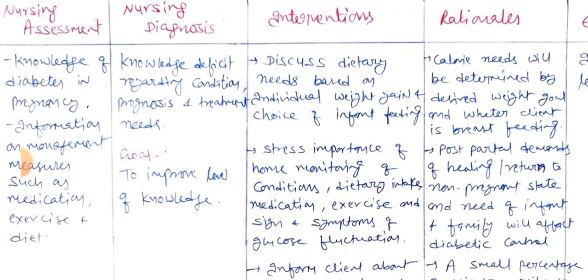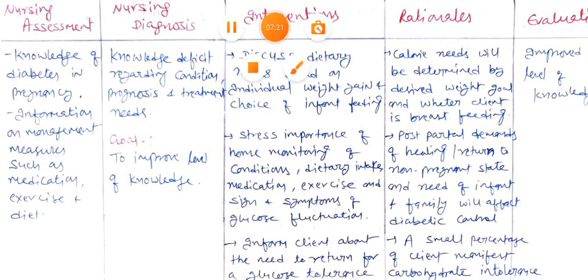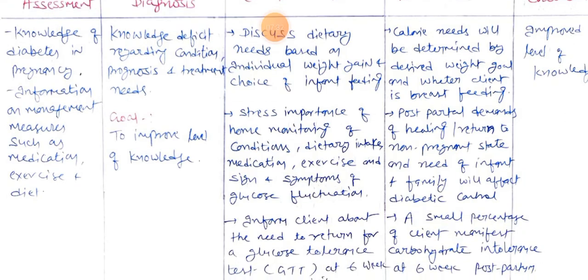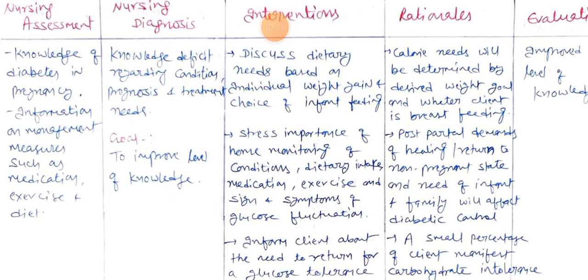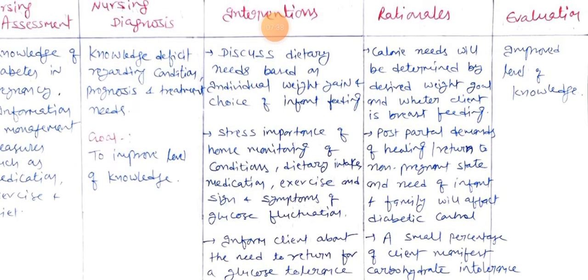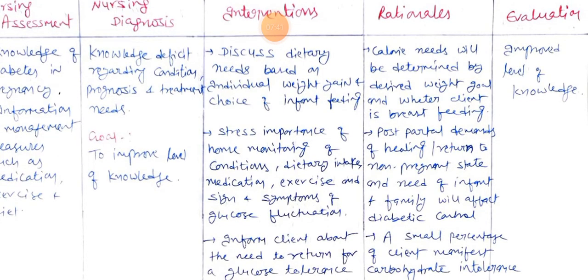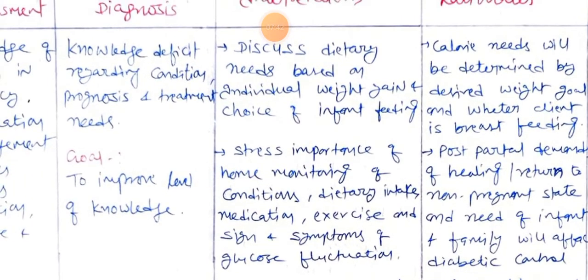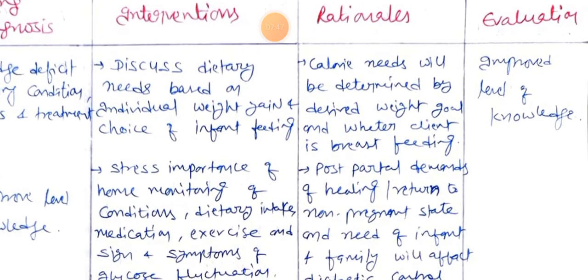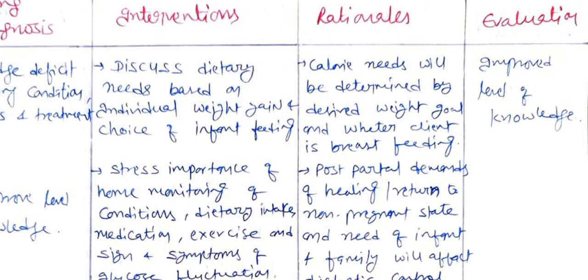Nursing diagnosis three — nursing assessment: evaluate client's knowledge of diabetes in pregnancy, available information, and management measures such as medication, exercise, and diet. Nursing diagnosis: knowledge deficit regarding condition, prognosis, and treatment needs. Goal: to improve level of knowledge.